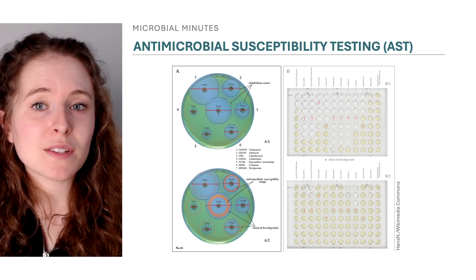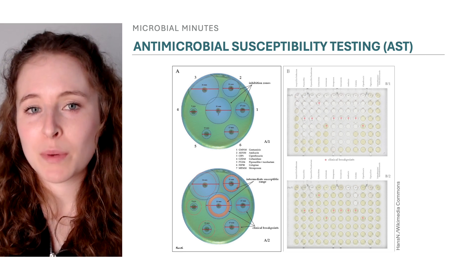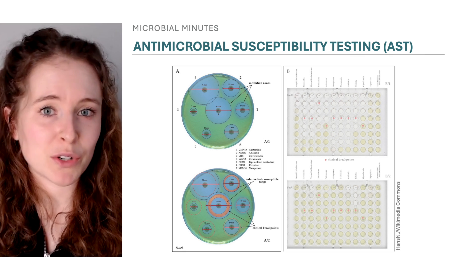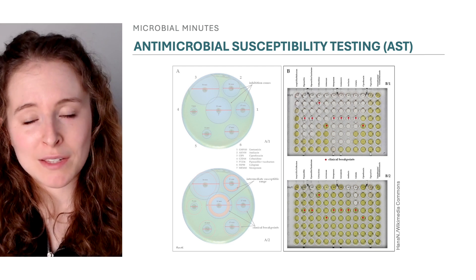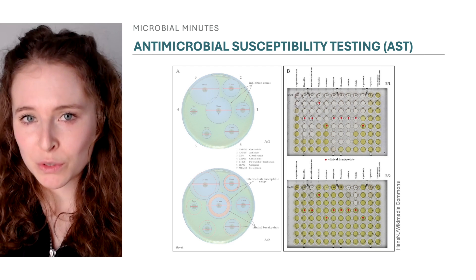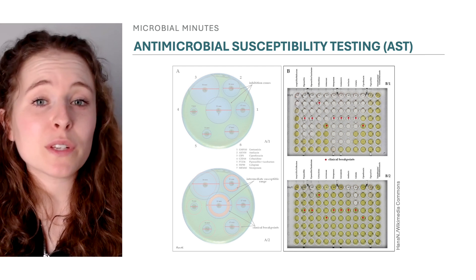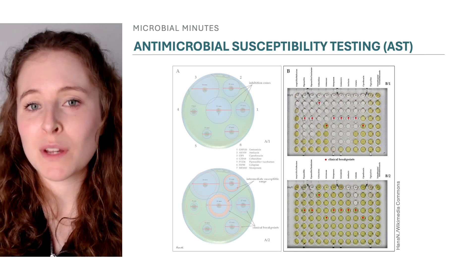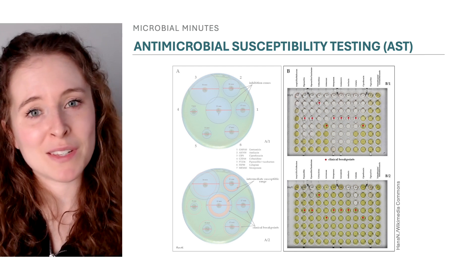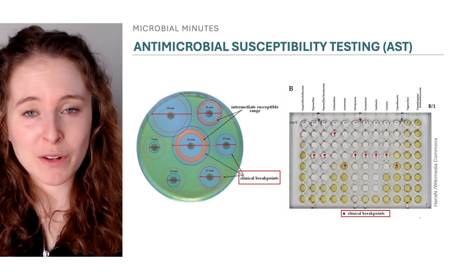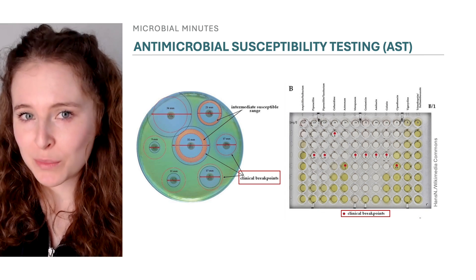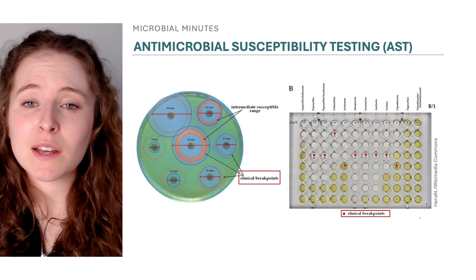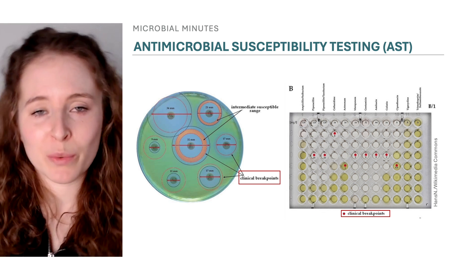In disc diffusion, discs containing antibiotic are placed upon a lawn of bacteria on an agar plate and the zone of inhibition measured. In broth micro-dilution assays, an isolate is cultured with different dilutions of an antibiotic. The lowest concentration that inhibits bacterial growth is known as the minimum inhibitory concentration, or MIC. The MIC, or zone of inhibition, is then compared against predetermined ranges of antibiotic concentrations, known as breakpoints, that classify the organism as susceptible or resistant.